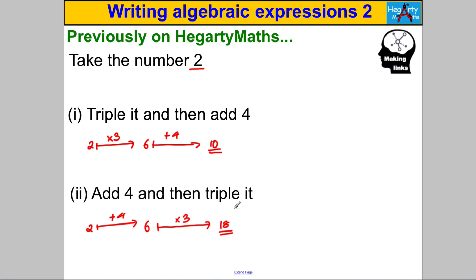Similarly, if we have similar instructions with our algebraic expressions — say take X, multiply it by 3, and add 4 — that's going to be different from taking X, adding 4, and multiplying by 3. We just need to be careful about what's happening first. We're going to do examples like in the first algebraic expressions video, drawing out how things that might look the same are in fact different.